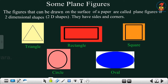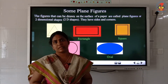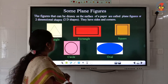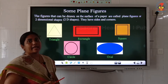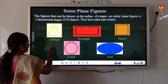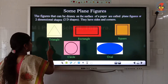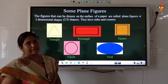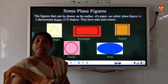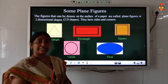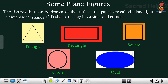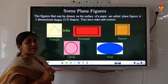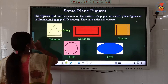All 2D shapes have sides and corners. Now let's look at them one by one. The first shape is called a triangle — spelling: T-R-I-A-N-G-L-E. For all plane shapes we find sides and corners. Looking at the triangle, you can count one, two, three sides.